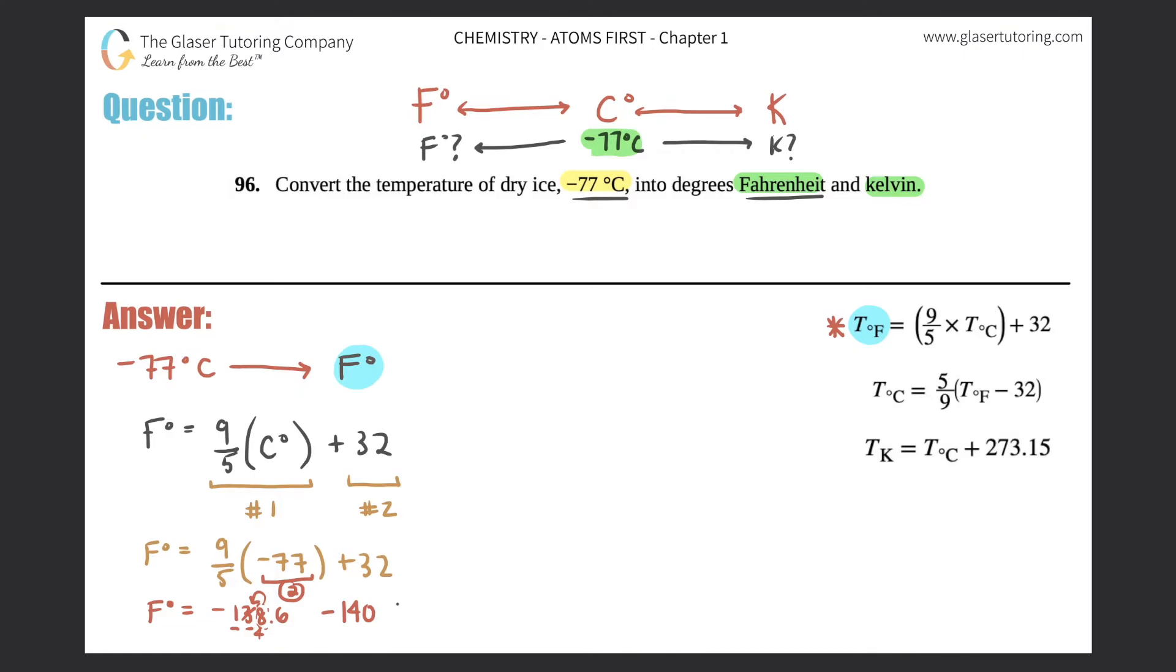Now I take the negative 140 and plus 32 to it. So my Fahrenheit would come out to be negative 140 plus 32. You get negative 108, and that would be your answer in Fahrenheit. So this would be negative 108 degrees Fahrenheit. Box that answer off. This is the answer to the first part.